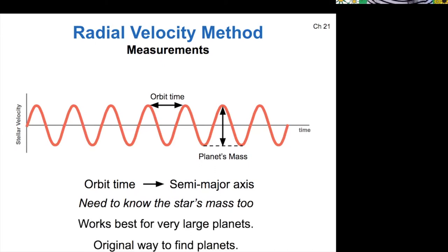This radial velocity method, since it is strongest for large planets, works best for large planets. So you wouldn't be able to find generally very small planets like the Earth with this method. What questions do you have about this idea of measuring velocity versus time?